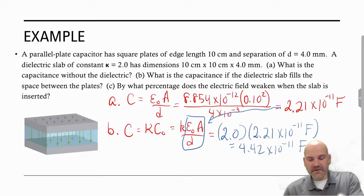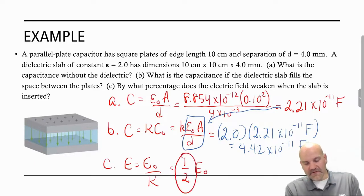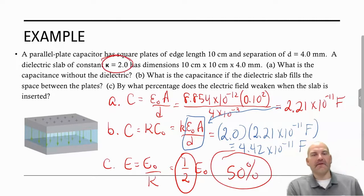But what's happening is our electric field, as we highlighted on the note slide, our electric field goes down. The way we look at it is our new electric field is going to be compared to our old one by simply kappa. So one-half E0. One-half turned into a percentage is 50%. So our new electric field is 50% weaker than our old one because our kappa is two.